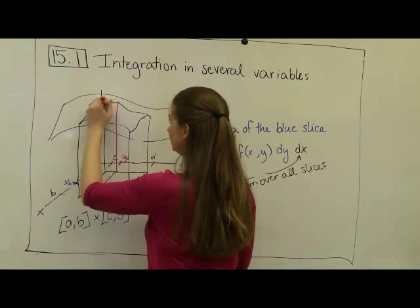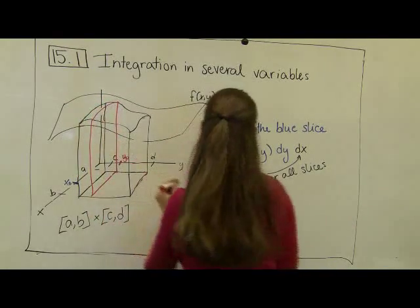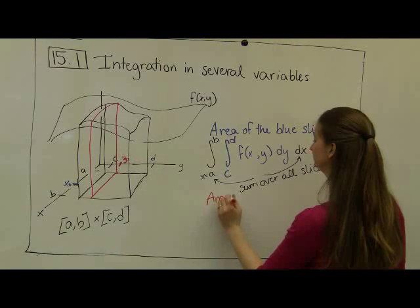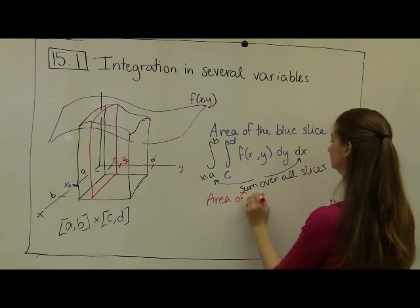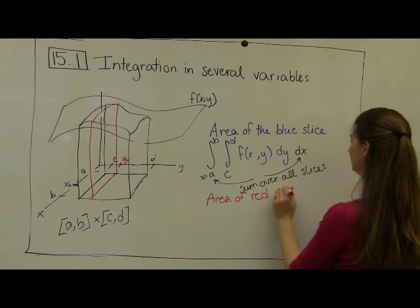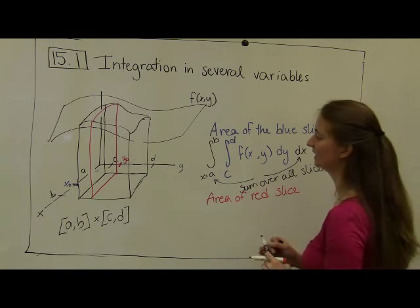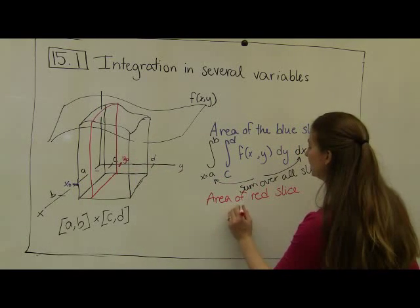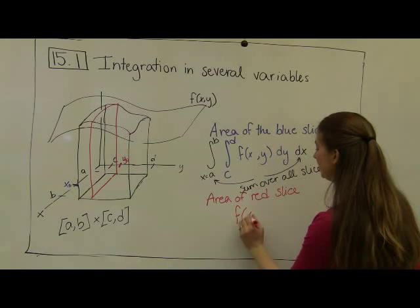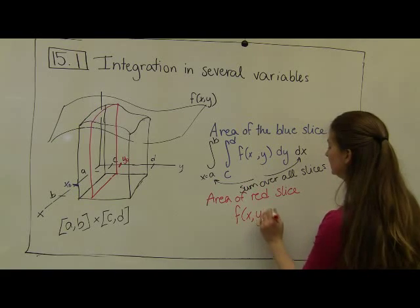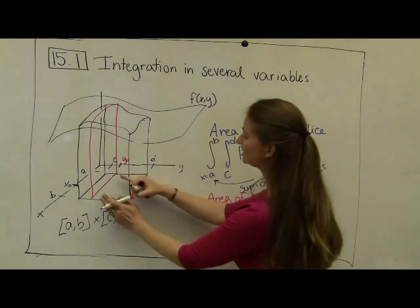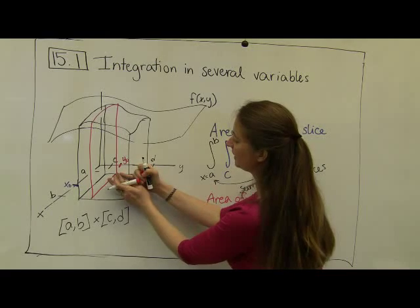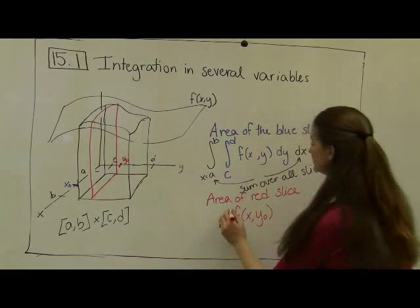And similarly, if I wanted to know the area of the red slice, it's exactly analogous. In this case, we're holding our y-naught constant, so I'm going to think of this as a function of x, where y-naught is held constant. And my x's are going to be changing from x equals a to x equals b.